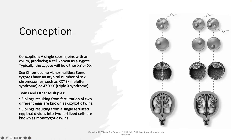Conception is when a single sperm joins with an ovum, or egg, producing a cell known as a zygote. Typically, the zygote will be XY or XX, meaning it will be male or female. There are sex chromosome abnormalities — some zygotes have an atypical number of sex chromosomes, such as with Klinefelter syndrome, where they have two Xs and a Y, or XXX syndrome, which is when there are three Xs on the 47th chromosome.